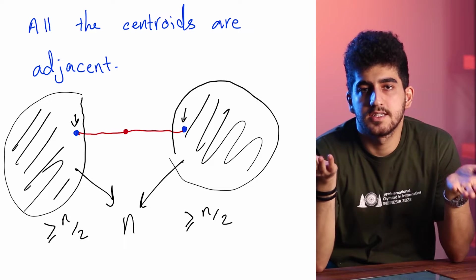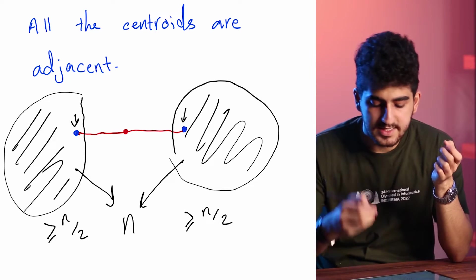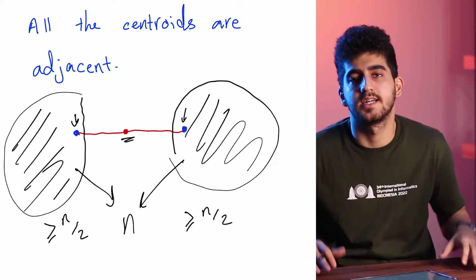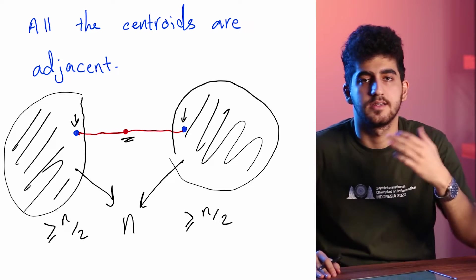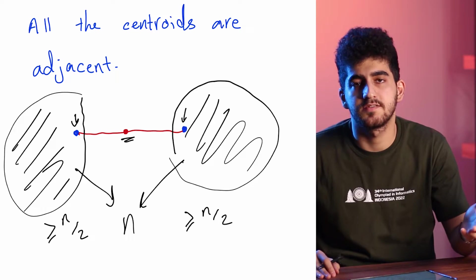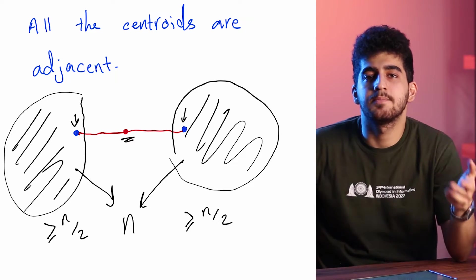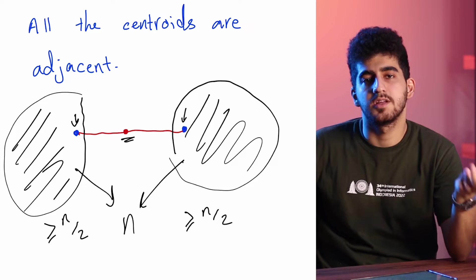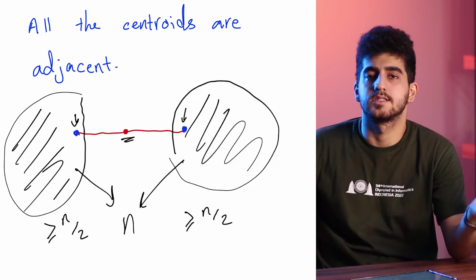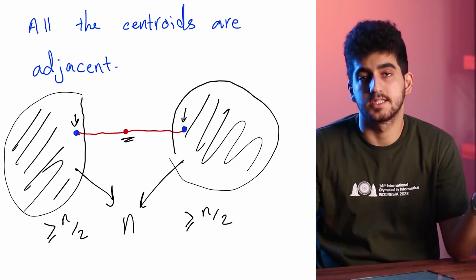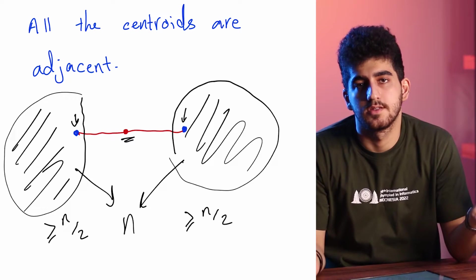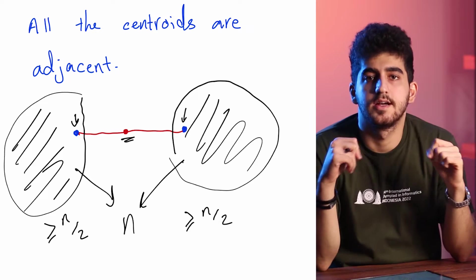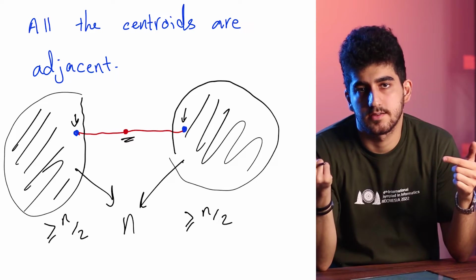But this is a contradiction because there is at least one vertex outside of these two components as well. And if we sum these values up, we have at least n+1 vertices. But we had n vertices. Therefore, it is not possible. And all the centroids should be adjacent.